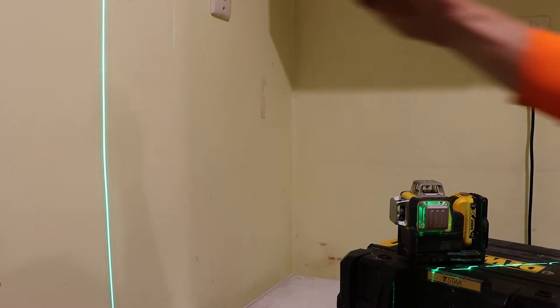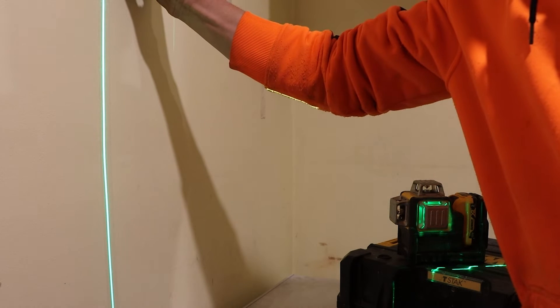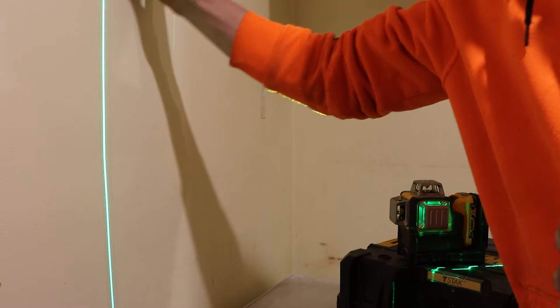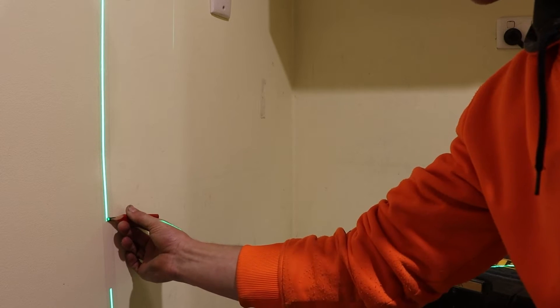The easiest way to do this is by making a mark on the wall where that laser is, marking the center at the top and at the bottom where your level is going to be.